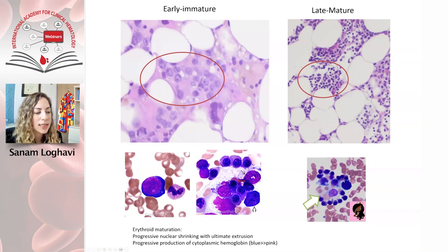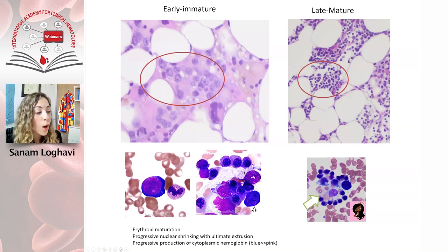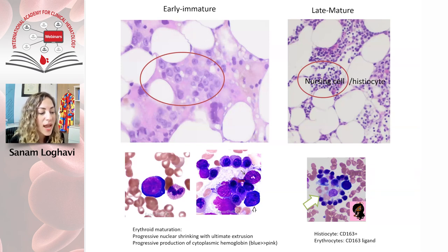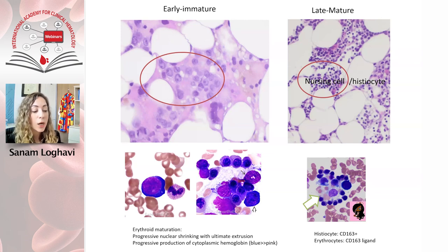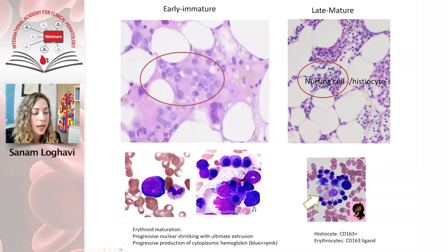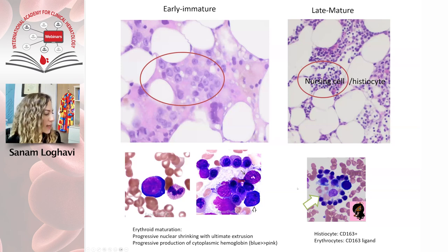I want to show you an example of a nurse cell. Nurse cells are histiocytes — CD163 positive — and erythrocytes have CD163 ligand, so they tend to populate around these cells. The reason they're called nurse cells is that we think these histiocytes are actually nursing the erythroid cells.